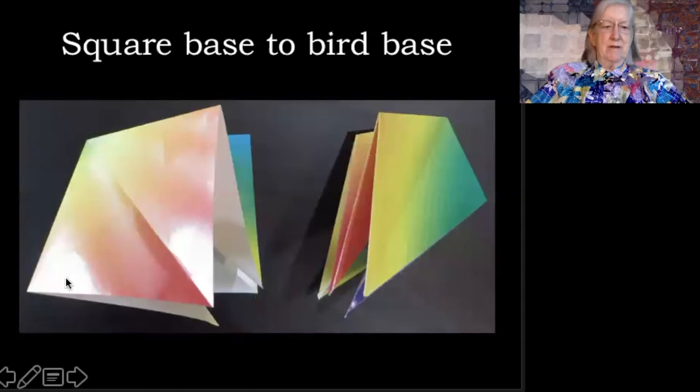From the square base, we can develop a number of figures, but one of those is the bird base, which we get by folding these edges inside. And the bird base is a very useful base for creating all kinds of animals. You'll find it frequently used in books on origami patterns.